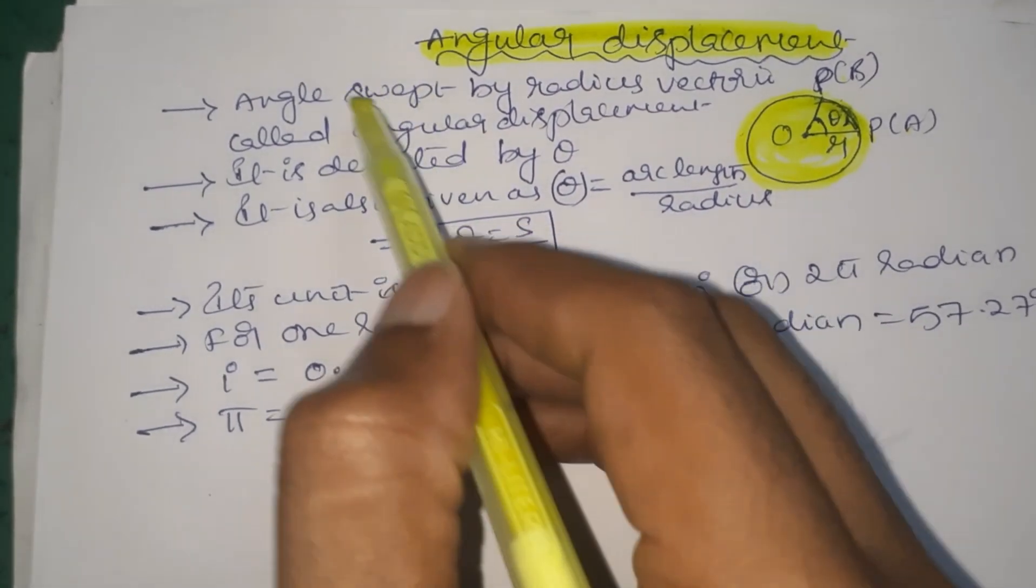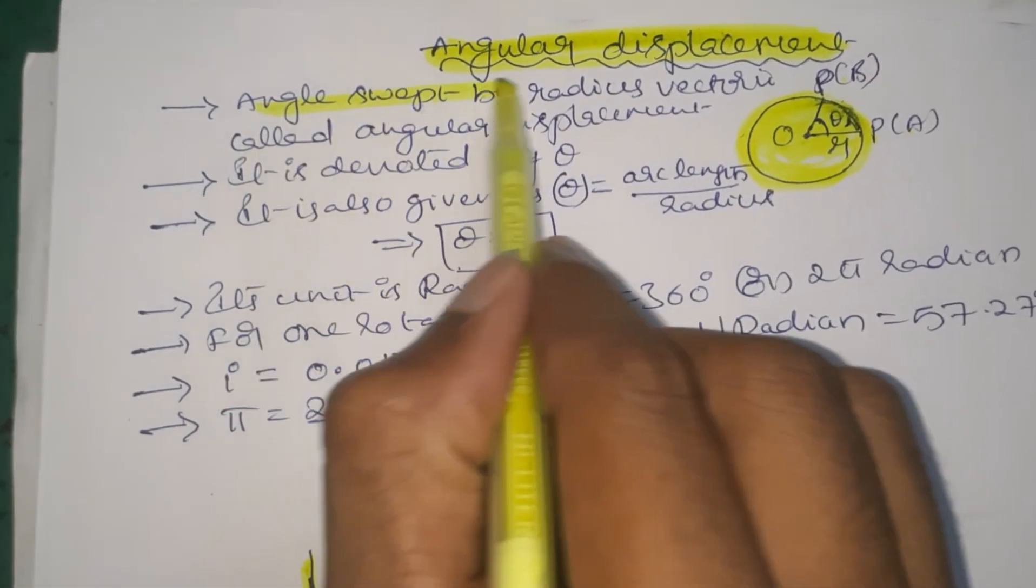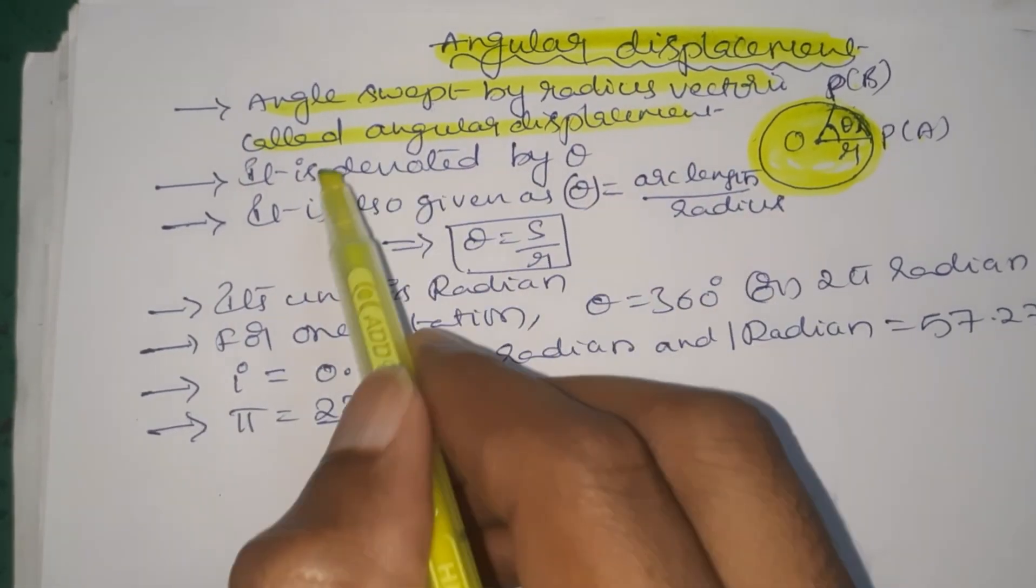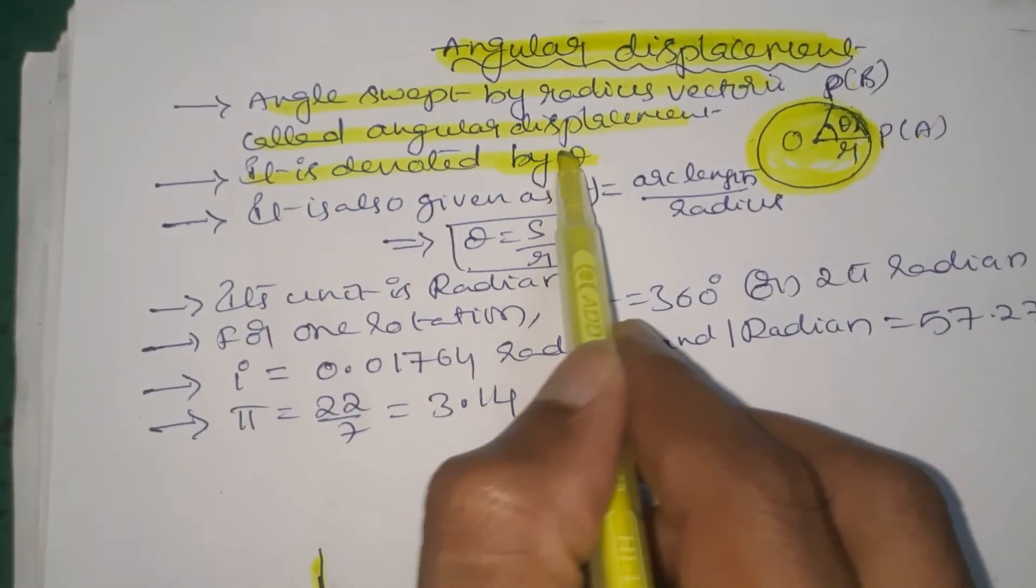This is the angular displacement. The angle swept by the radius vector is called angular displacement. It is denoted by theta.